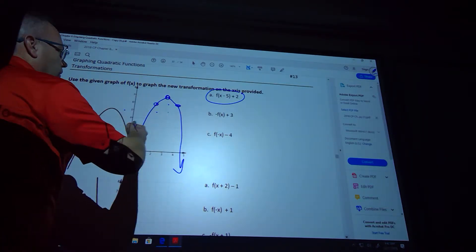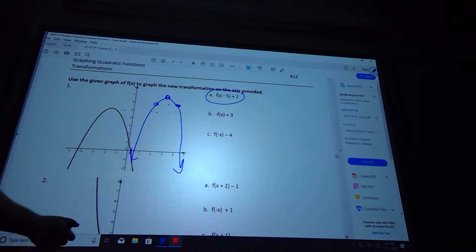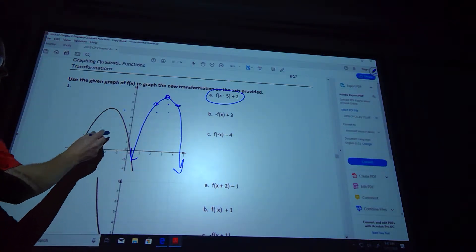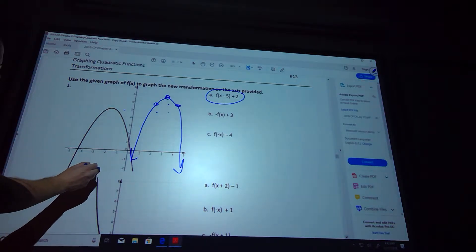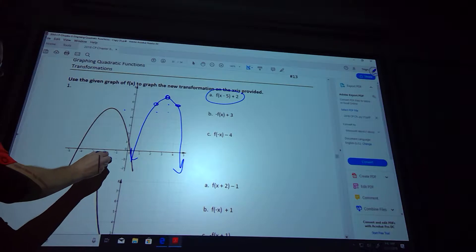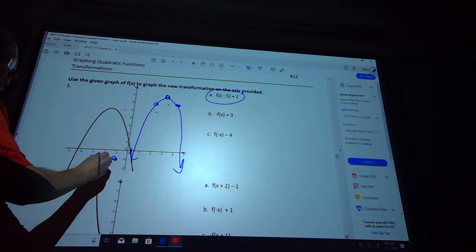This negative out front is going to flip the whole thing over, and then we're going to move it up 3. So this is at positive 5, so it comes down to negative 5 down here, and I go up 3. So I get to right here, and I flipped it over because I had a negative out in front.